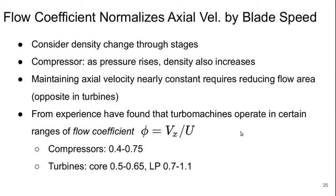And then finally, the other non-dimensional parameter, which is related to the mass flow or axial velocity, is the flow coefficient. And this basically just normalizes the axial velocity by the blade speed. But if we think about density changing through the stages, in the compressor, as the pressure rises, the density is also going up. If we want to maintain axial velocity to be roughly constant, we need to reduce the flow area. And the opposite is true in turbines.